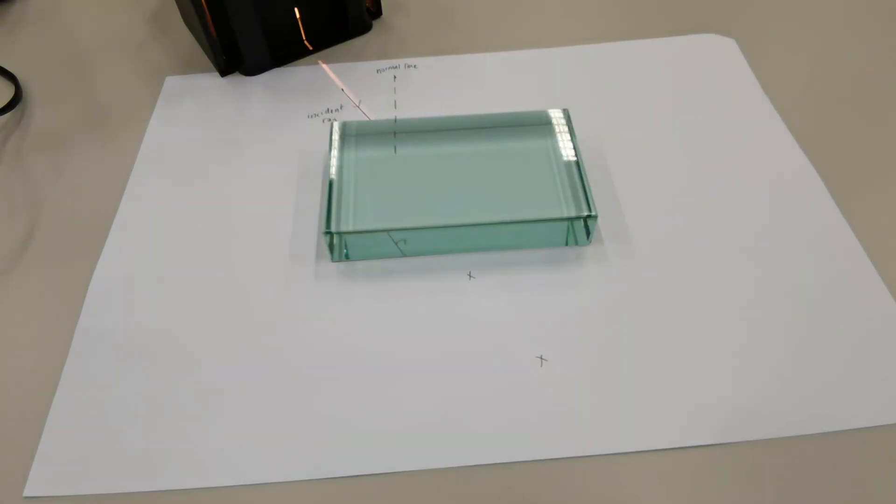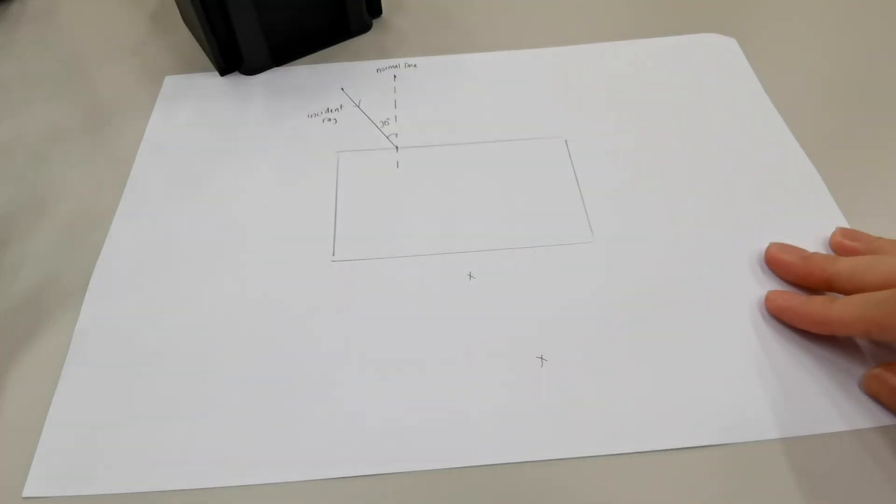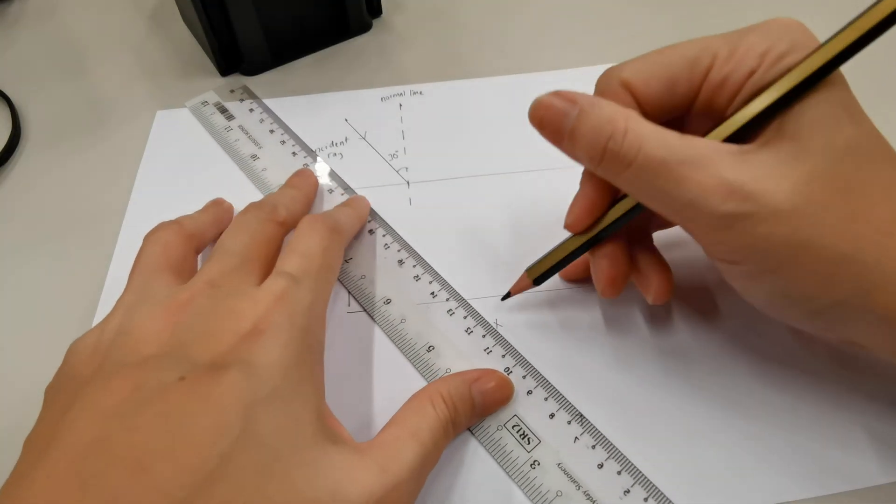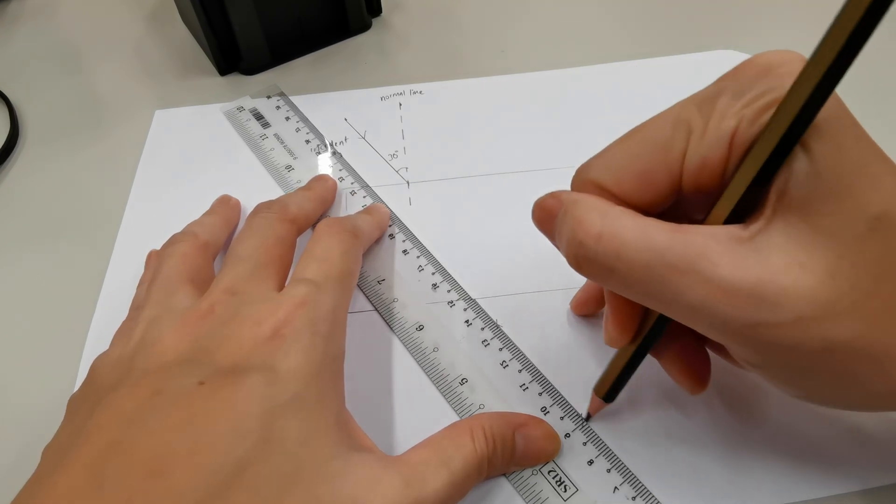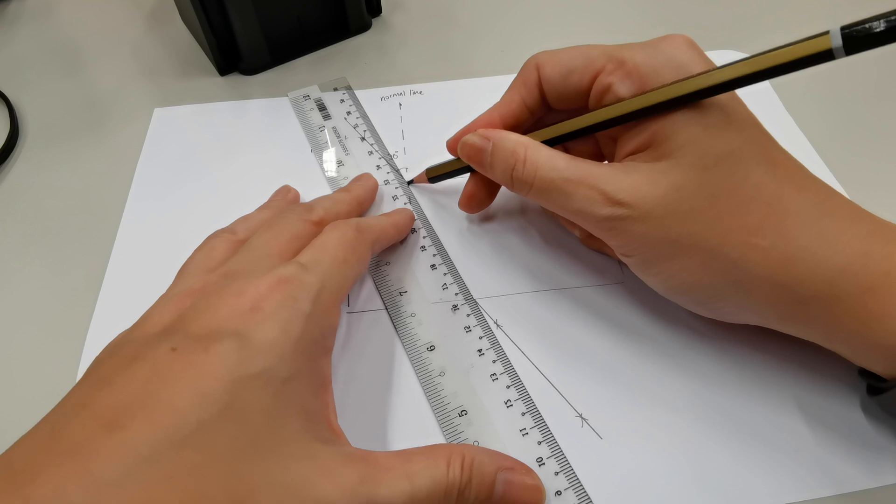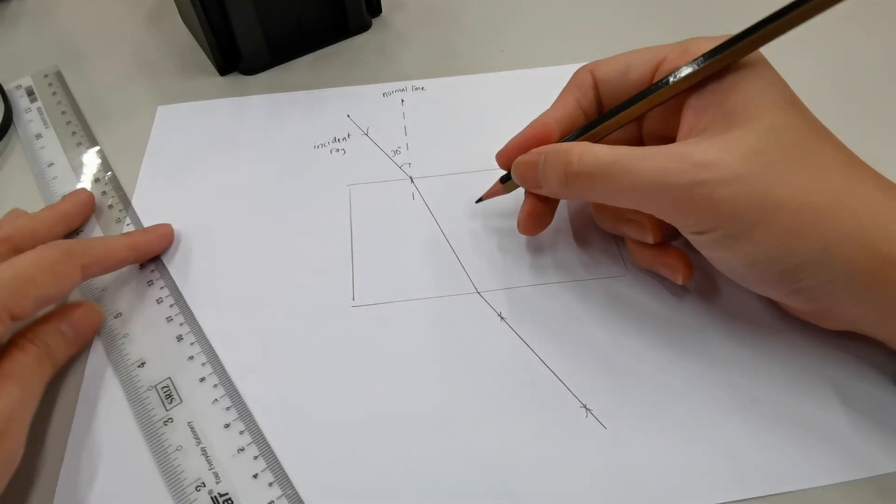Switching off the ray box now, let's remove the glass block using a ruler. We will connect these two crosses into a straight line. And then we connect these two points, which will form the refracted ray.